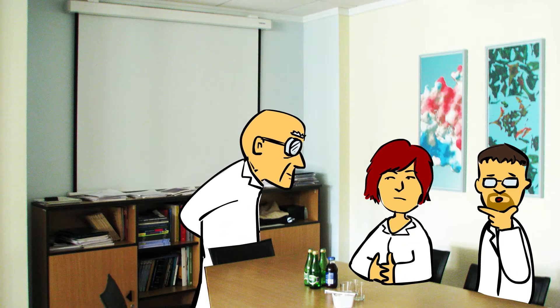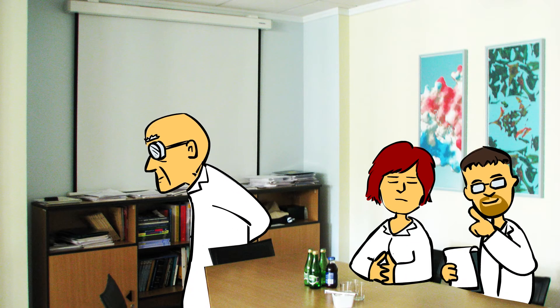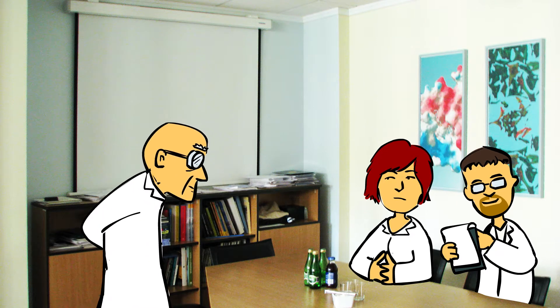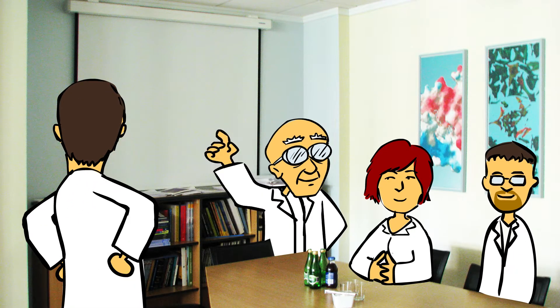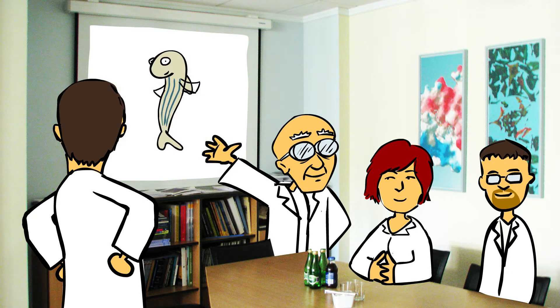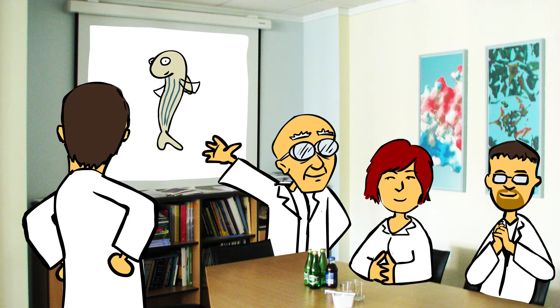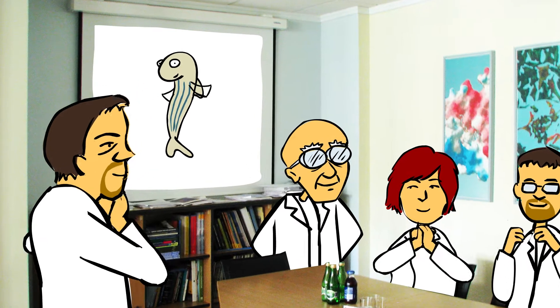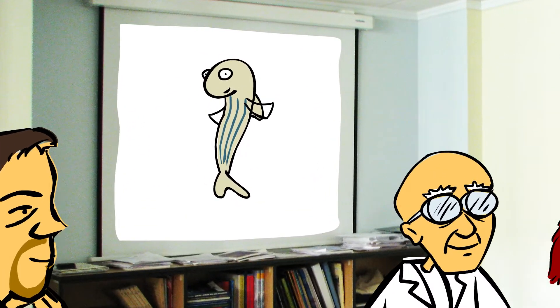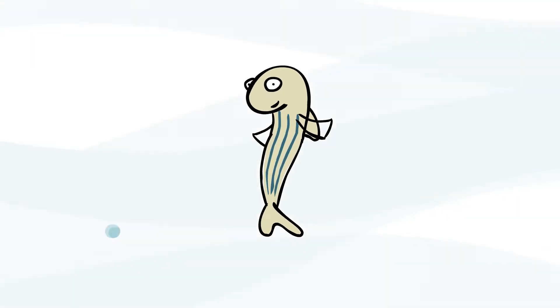Several years ago, a group of researchers from the institute decided that it would be easier to understand the complicated human organism if we first studied a simpler one. The director of the institute suggested that the small zebrafish would be a good model organism. His suggestion met with an enthusiastic reaction from the researchers. Do you know why they chose the zebrafish and not something else, like a mouse?